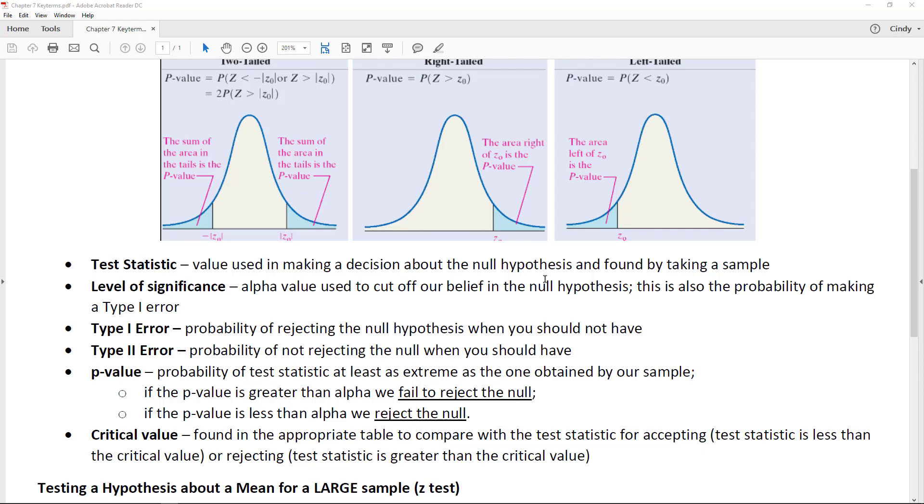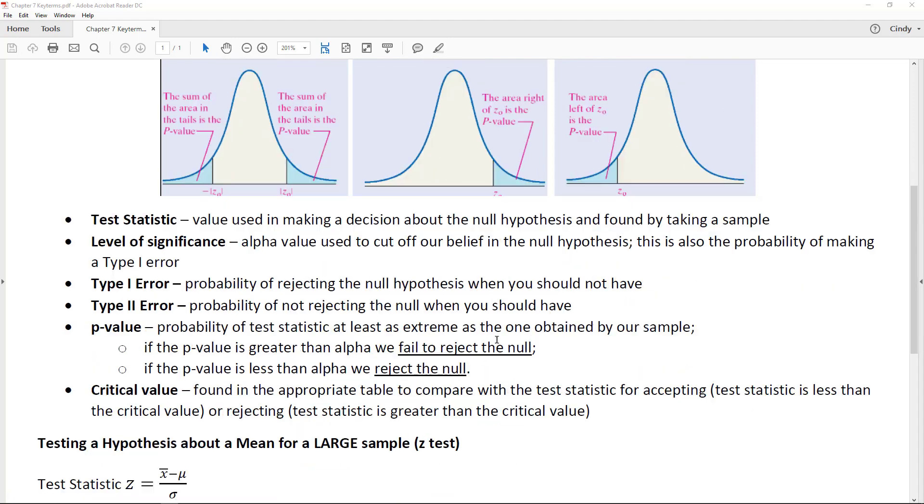But how much error can you stand? That's what we call a Type I error. Alpha is the probability of rejecting the null hypothesis when you should not have. In other words, maybe you just got a bunch of bags of chips that didn't have a lot of chips in them—you just got a bad sample.